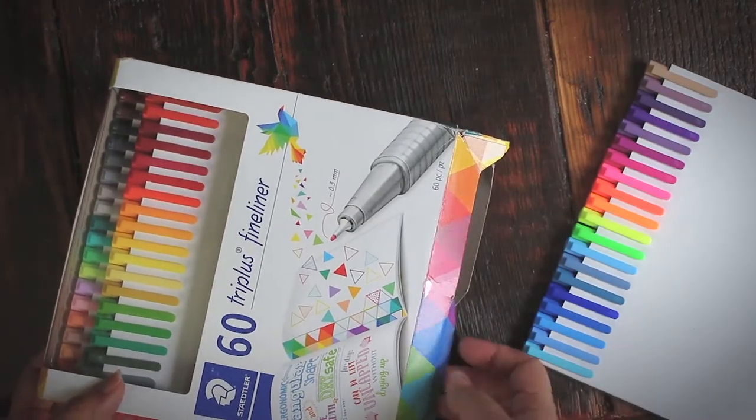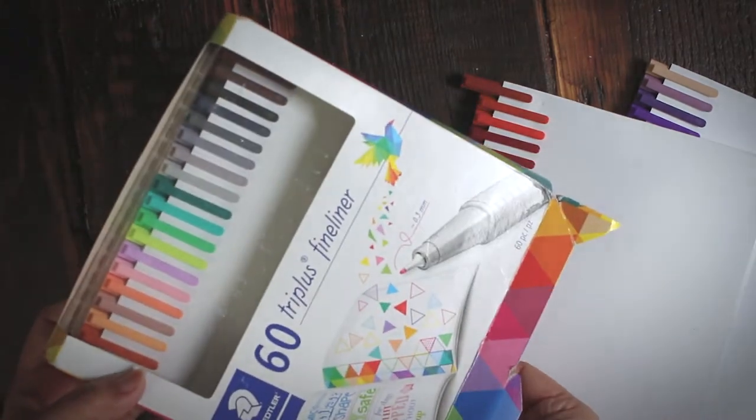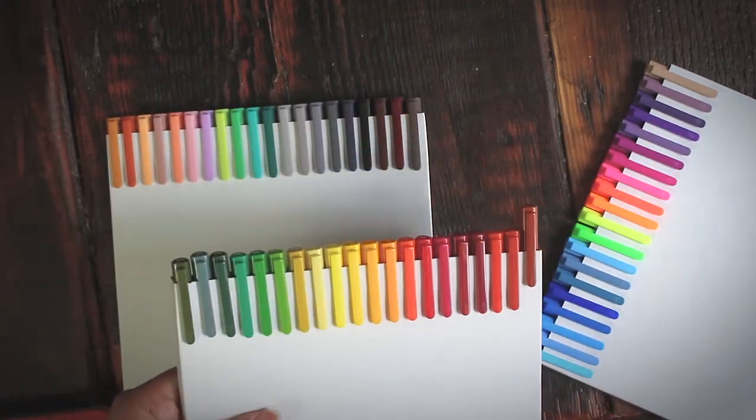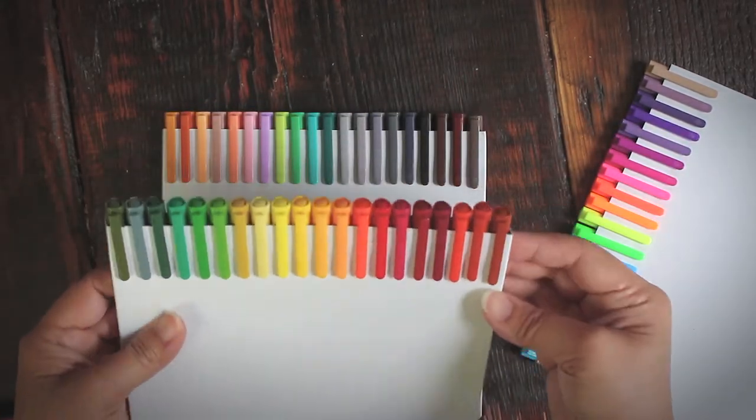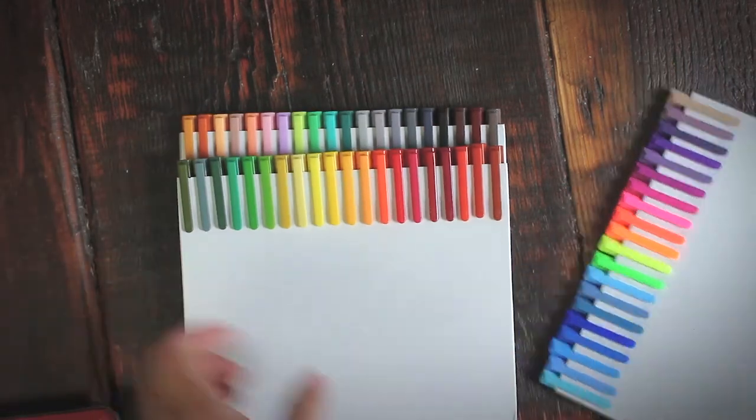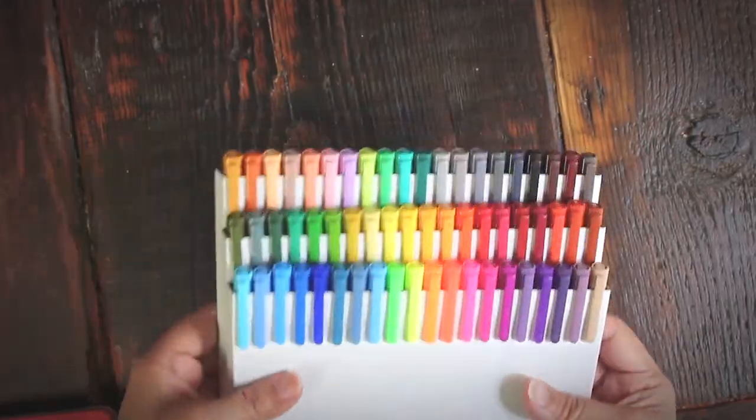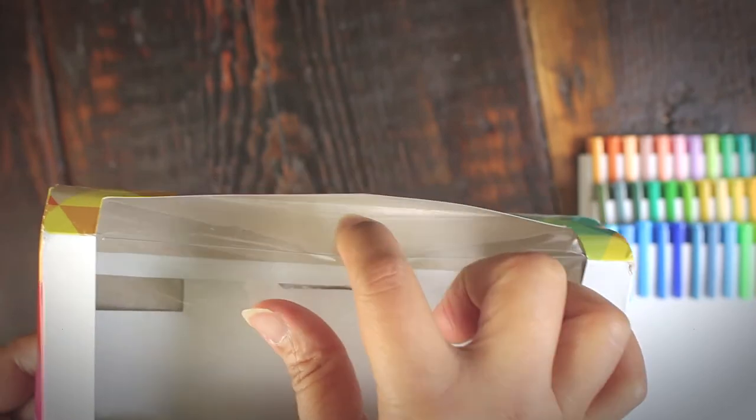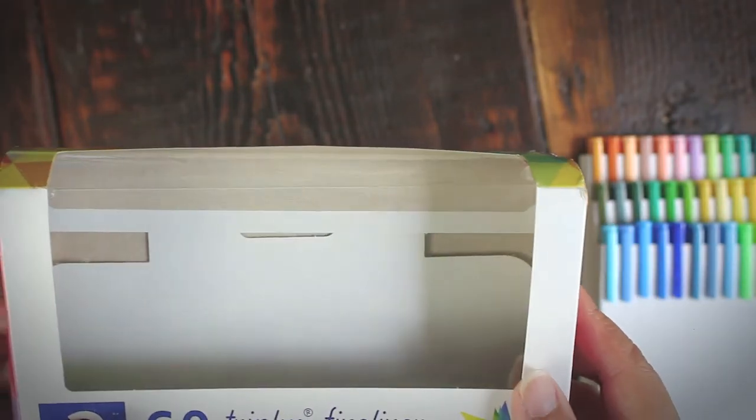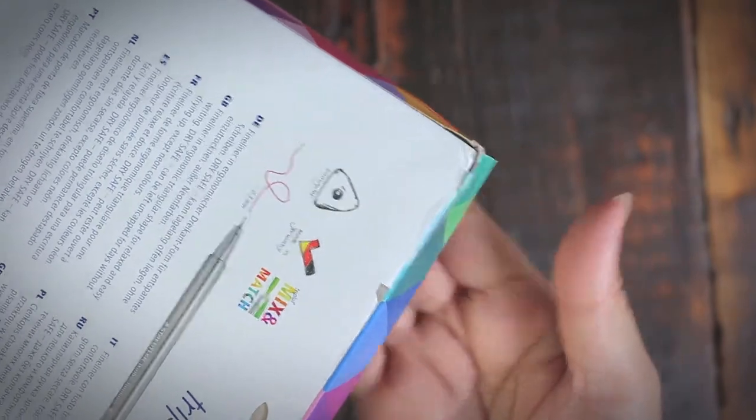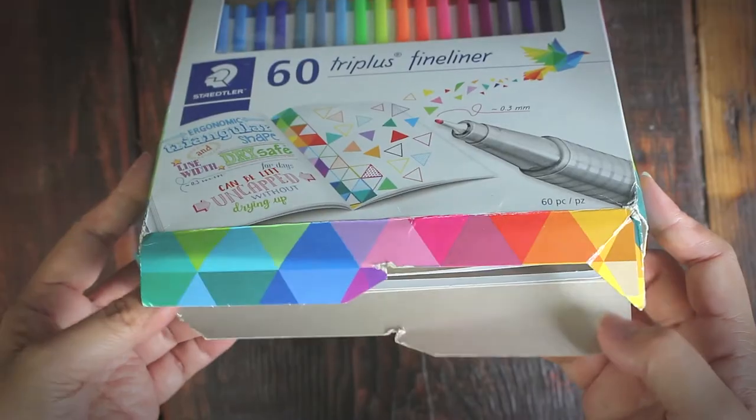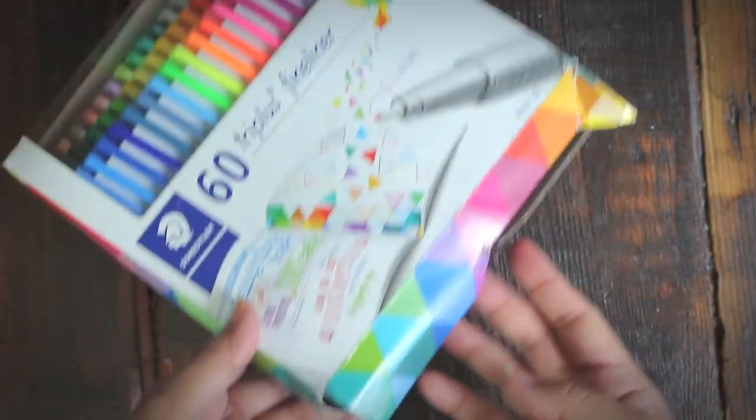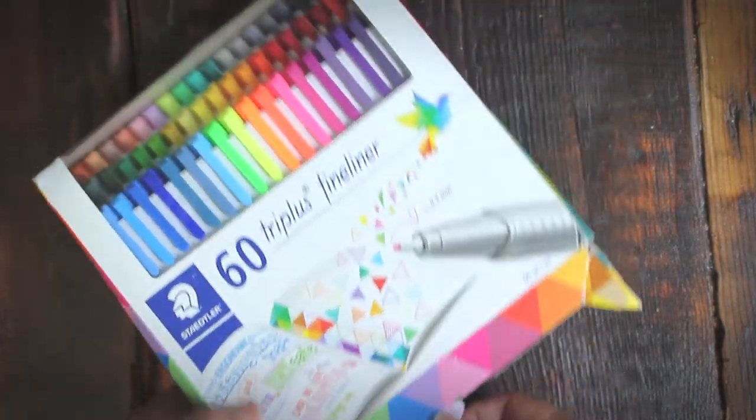Staedtler also has many Triplus fineliner sets. Their 50 color set comes in a metal tin, while this larger 60-piece set, which I'm reviewing, is only packaged in a very flimsy carton. Staedtler pens also come in 42 colors and in 36 colors, both of which are poorly packaged in ugly cartons that are not fit for long-term storage. In fact, the cartons are so flimsy that my set arrived smashed and mangled open like this when I got it in the mail. I was forced to transfer my supplies in a caddy.